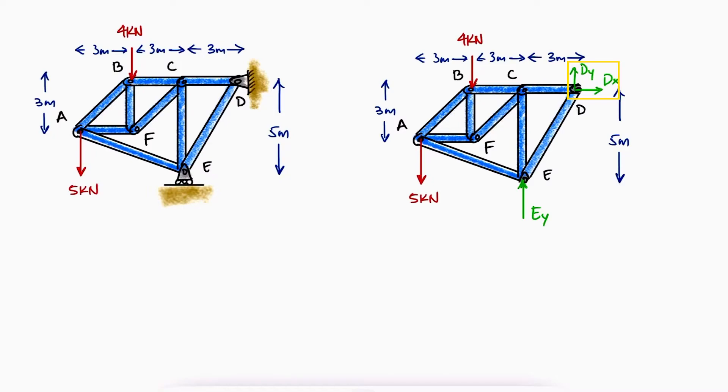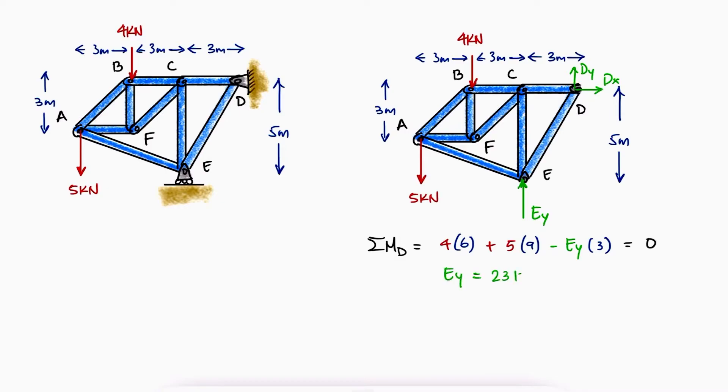To get rid of two of the three variables we have here, we'll begin with a sum of moments about D to solve for the Y reaction at E. A sum of forces in Y would allow us to solve for DY and the sum of forces in X for DX.